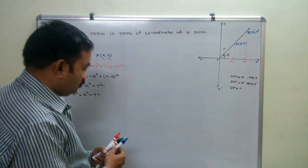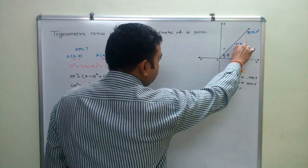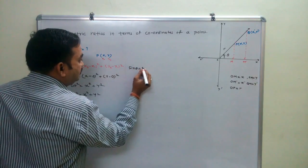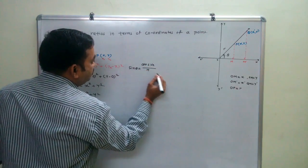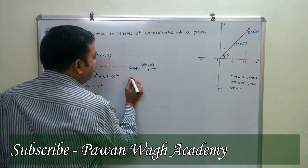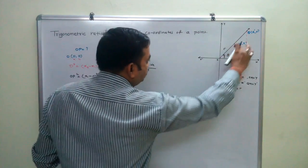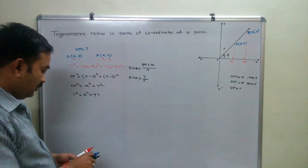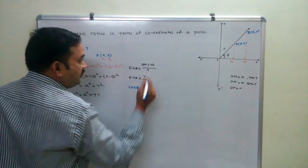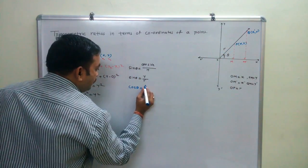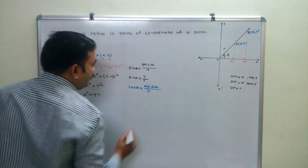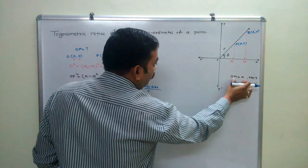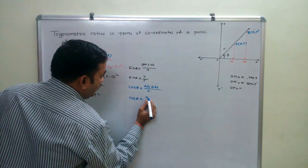Now we will find out the different trigonometric ratios. We have hypotenuse R and the opposite side to theta is PM. So first, the value of sine theta: sine theta is opposite side upon hypotenuse, that is PM upon R, and PM equals y, so sine theta equals y upon R. For cosine theta: cos theta is adjacent side upon hypotenuse. The adjacent side of theta is OM, and OM equals x, so cos theta equals x upon R.